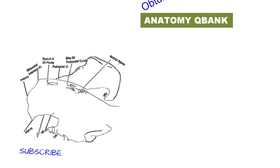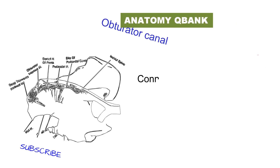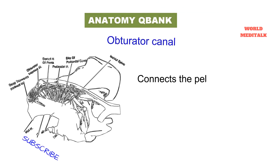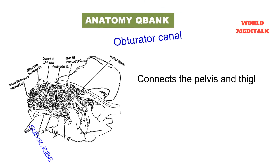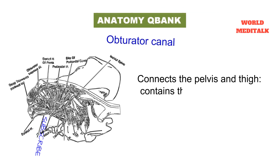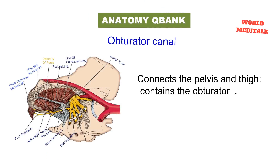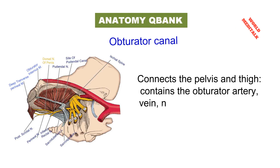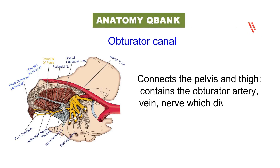The obturator canal connects the pelvis with the thigh and contains the obturator artery, vein, and nerve, which divides into anterior and posterior divisions.